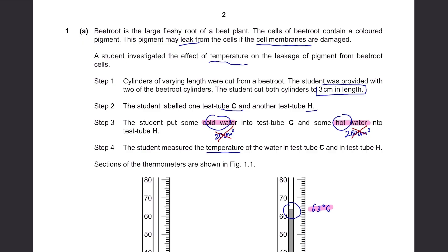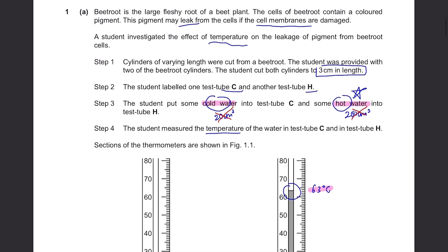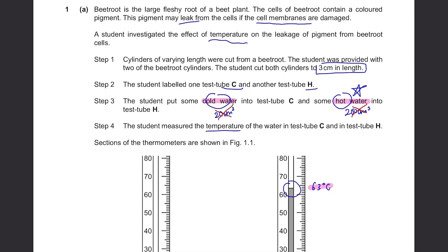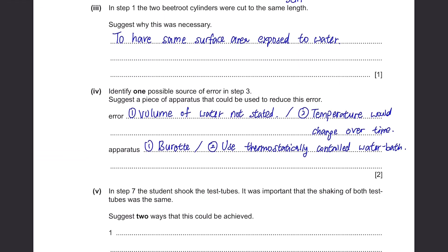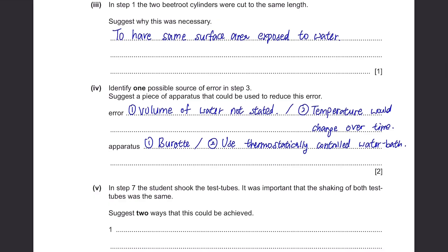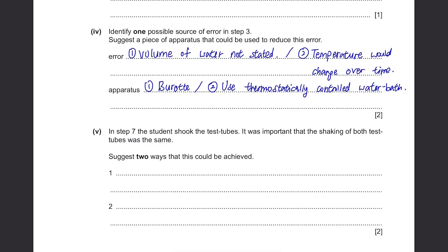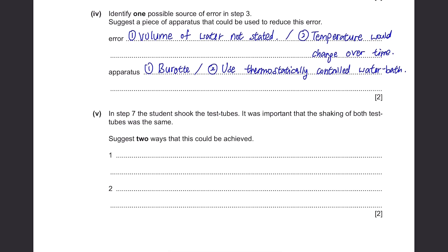Then there is another answer. Well, you know you're using hot water, but you did not mention how you're going to maintain this temperature. Because as the time passes, the temperature will definitely decrease to the room temperature. So you can try to insulate the container that contains hot water, or use a thermostatically controlled water bath to maintain a constant temperature. In step 7, the student shook the test tubes. It was important that the shaking of both test tubes was the same. State two ways that this could be achieved. You kind of have to imagine the shaking process for this. Firstly, you need to shake it for the same amount of time. So let's say you shake it for 30 seconds for test tube C, then you shake it for 30 seconds as well for test tube H. Then the second answer is the intensity of shaking the test tubes should be the same. Try to shake those two test tubes with same strength or using the same amount of energy to get accurate results.